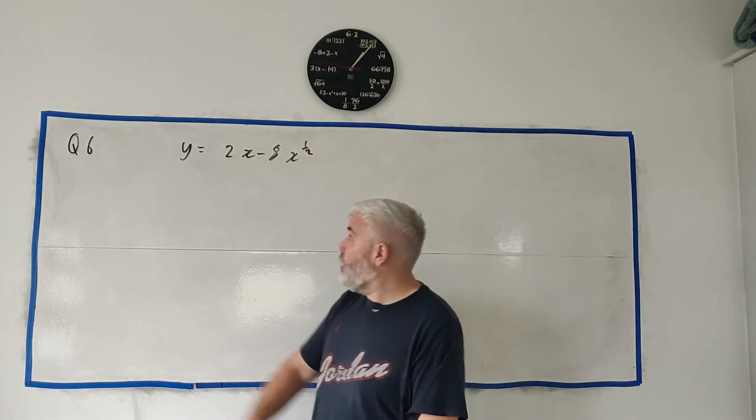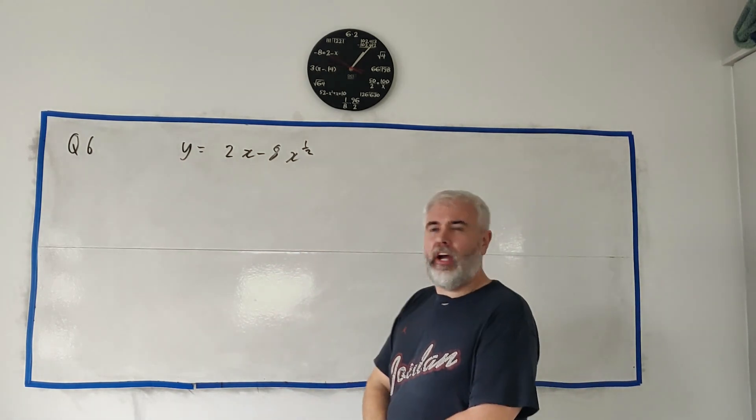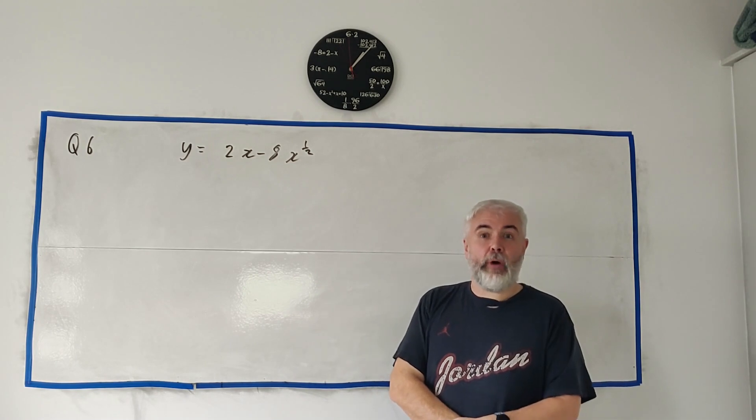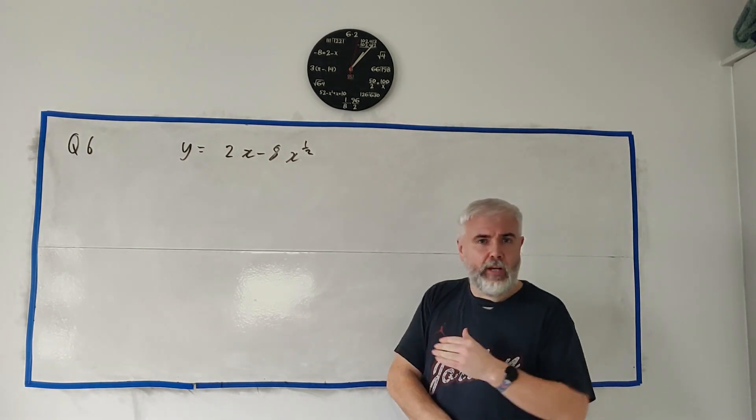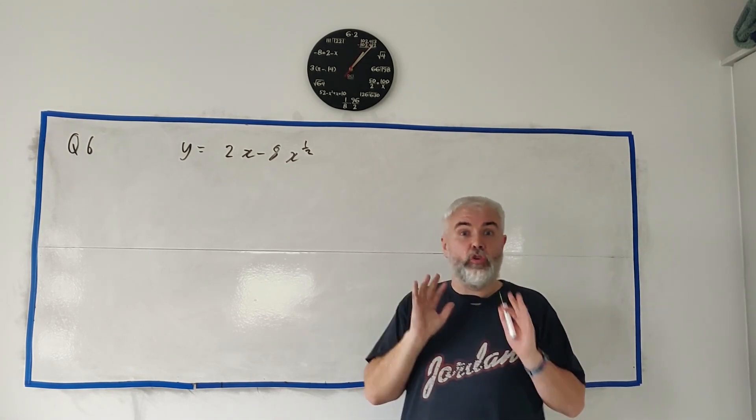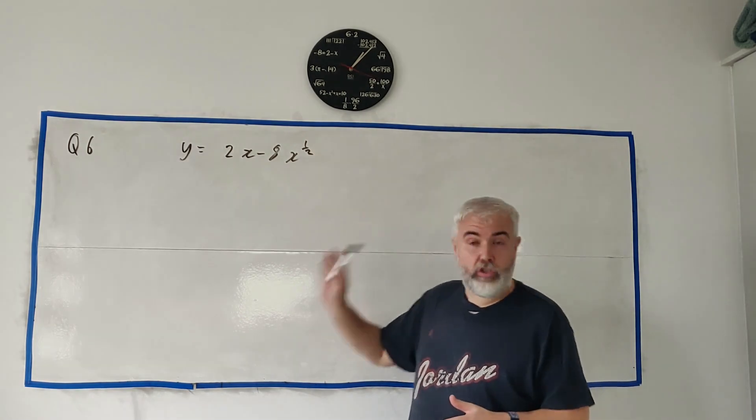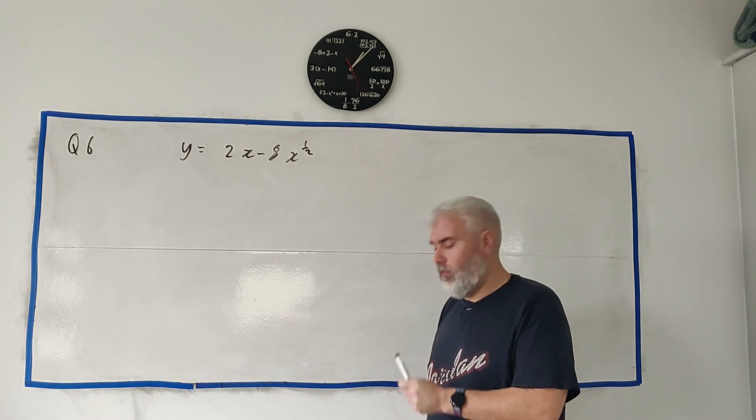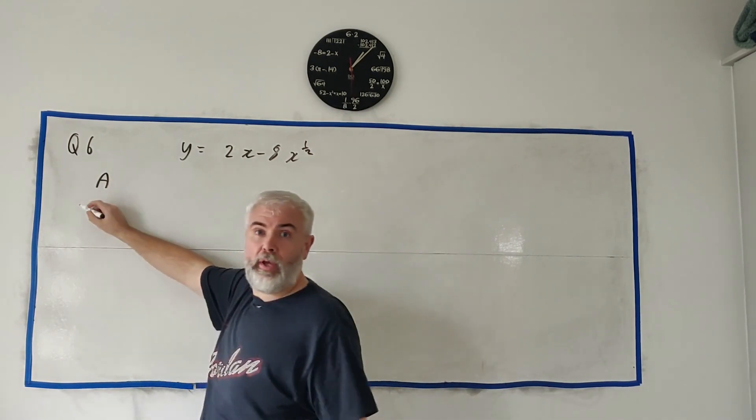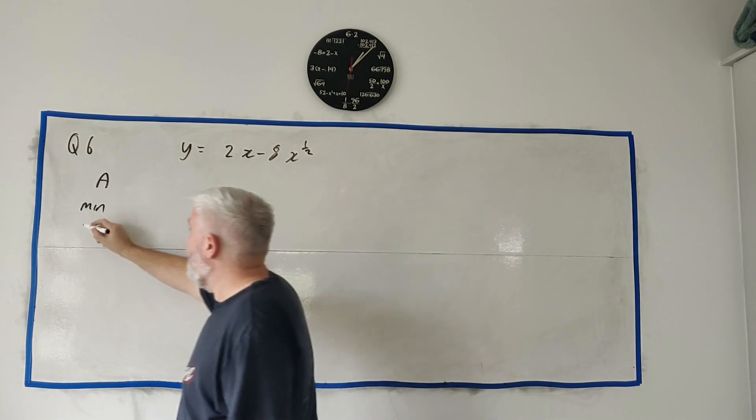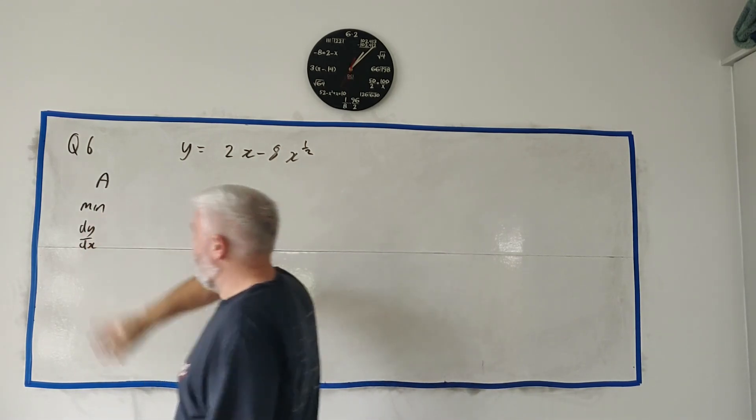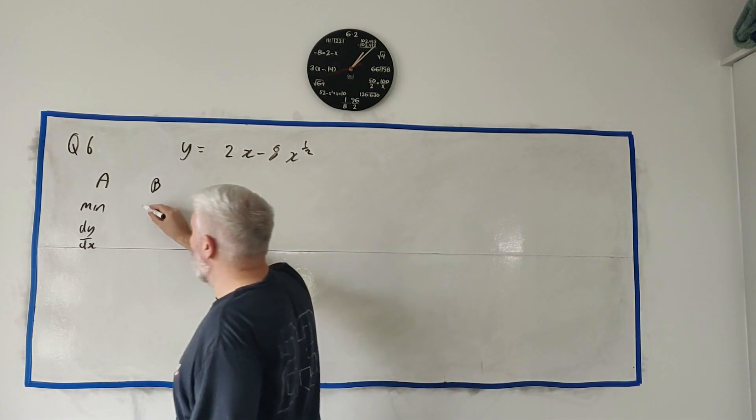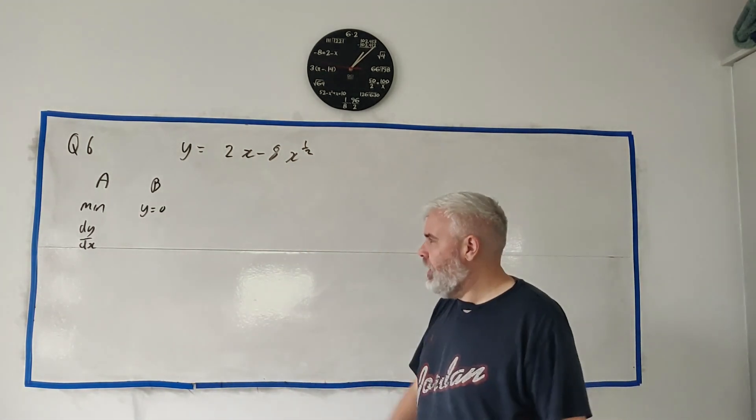In question 6 they tell us about a curve that's y is equal to 2x minus 8 times x to the power of a half and it has a minimum point at A and it intersects the positive x-axis at B. Now they don't draw this for us although they draw in the next part. Let's try and do this question just from the maths. So there's sort of like two different parts here: find the coordinate of A and find the coordinate of B.